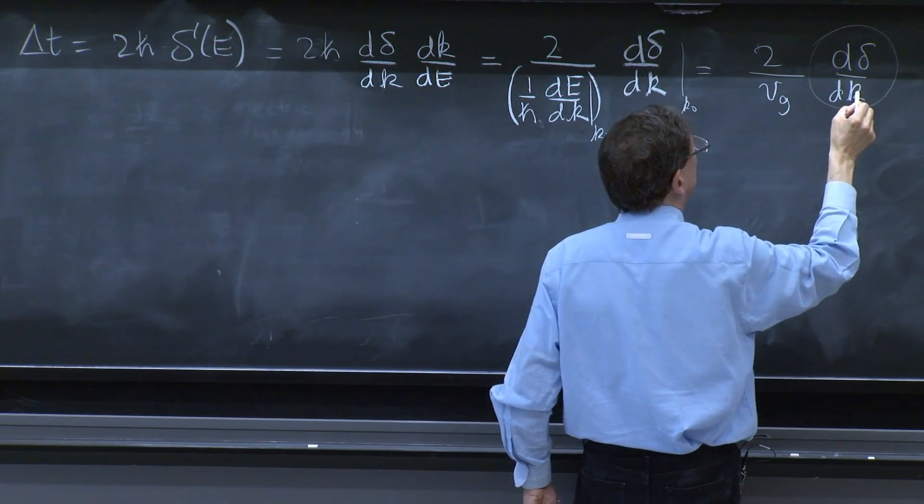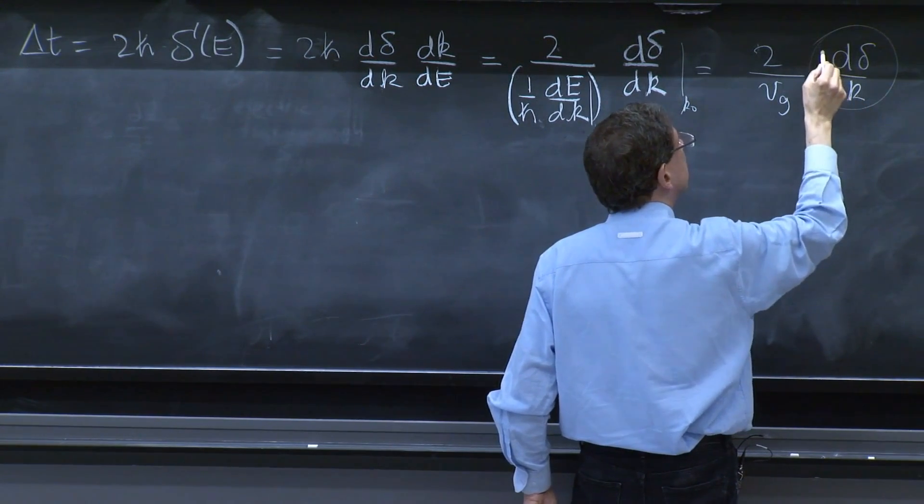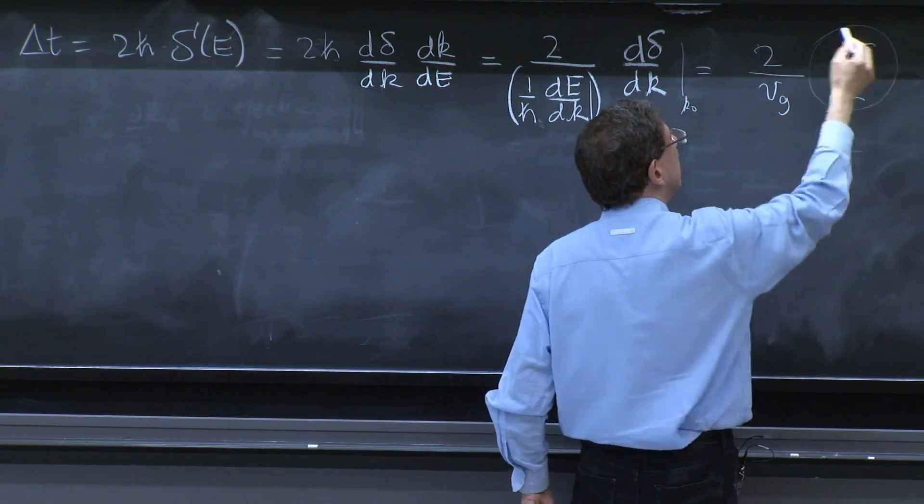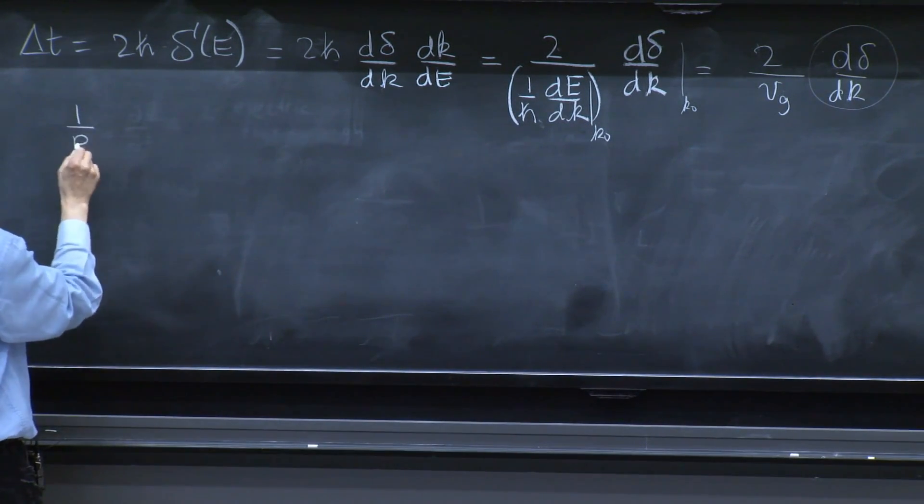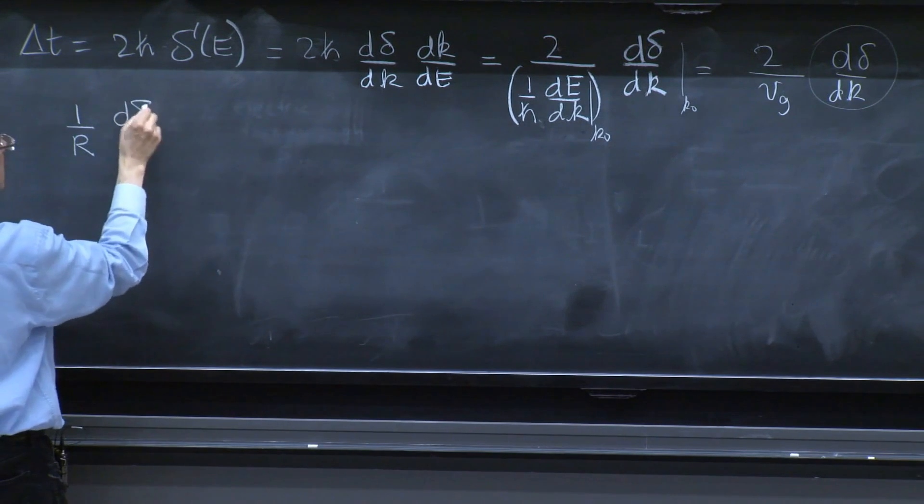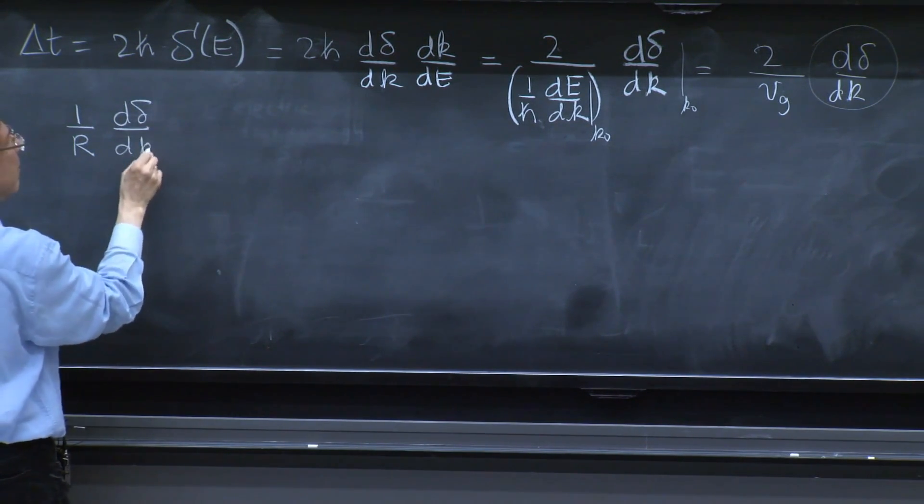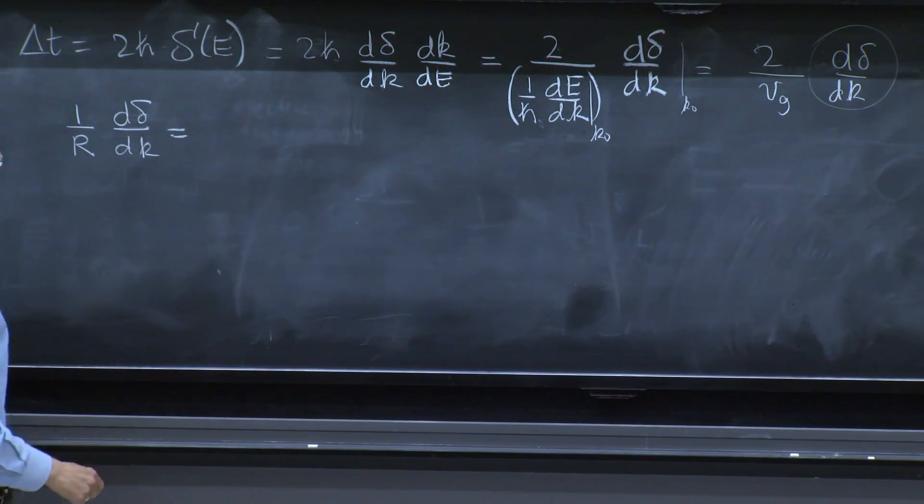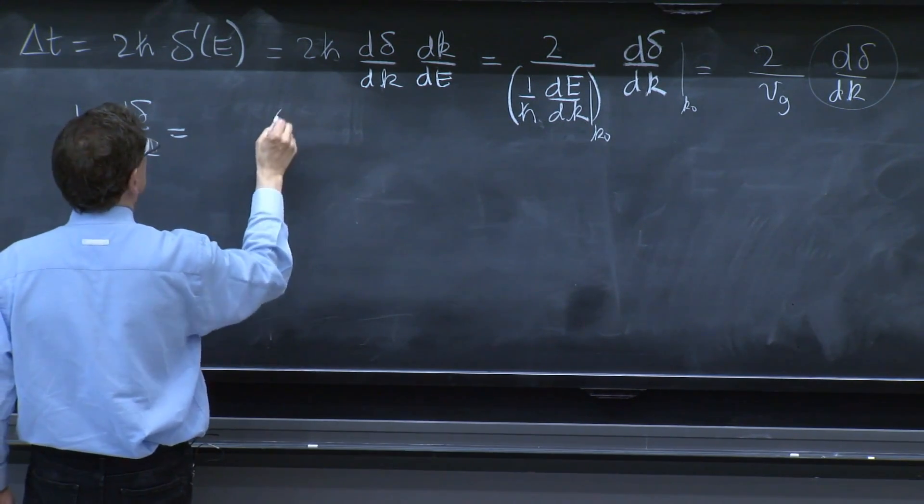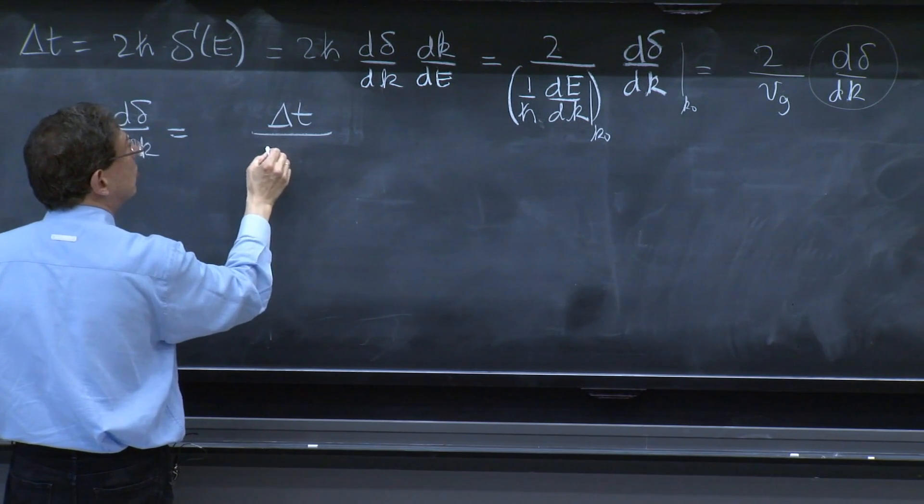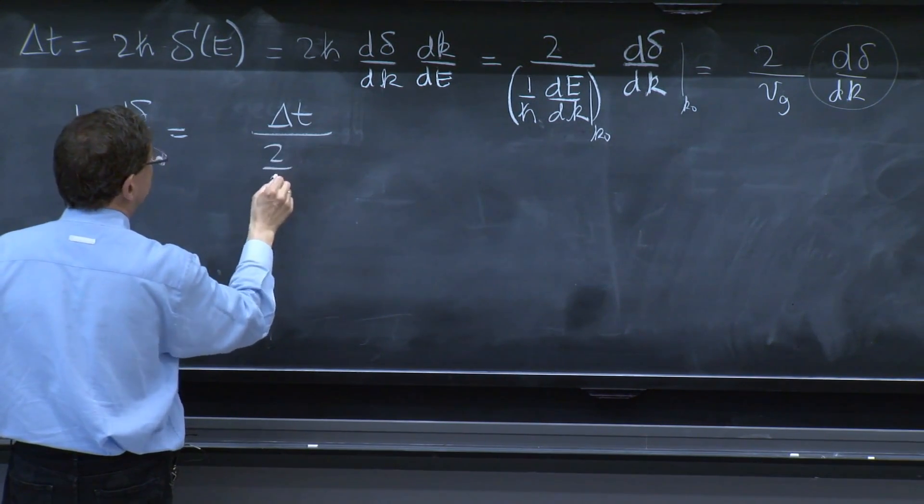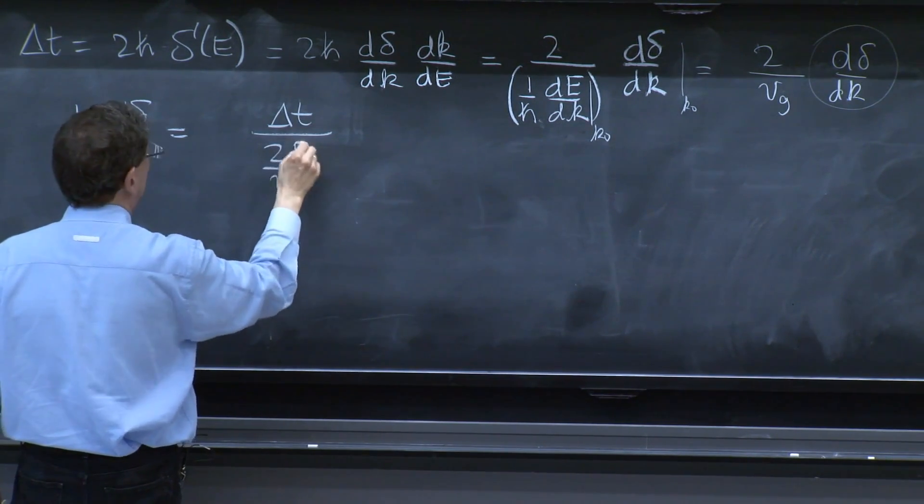So if I multiply by 1 over r, this will have no units. So I claim that 1 over r d delta dk is equal to delta t. And you'll have 2 over vg, and you'll have 2 over vg and r.